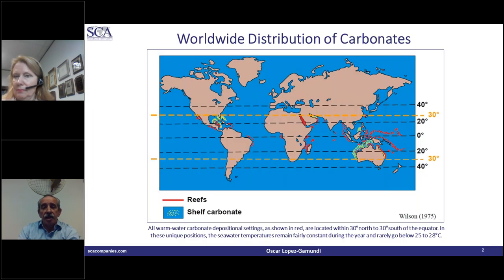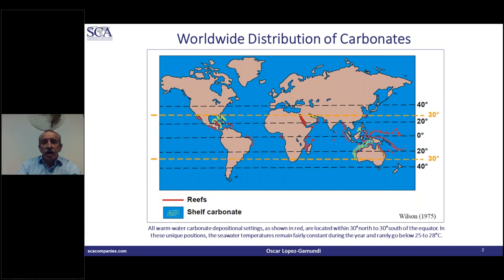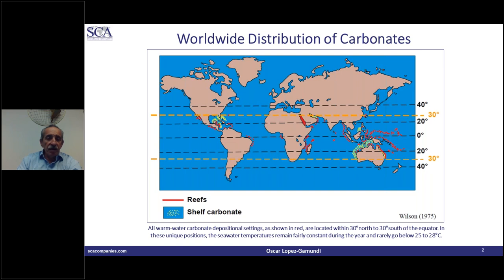Just to make sure we're all on the same page: what you see there is the worldwide distribution of carbonates in general — they're very sensitive to temperature of the seawater. There are two big main families: the reefs and the shelf carbonates, also known as oolitic shoals. From the hydrodynamic point of view, oolitic shoals are similar to siliciclastic sands. All carbonates develop in areas where clastic sediment input is minimum.